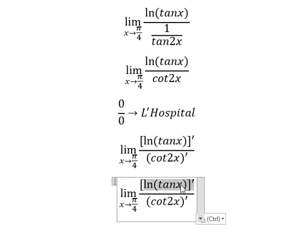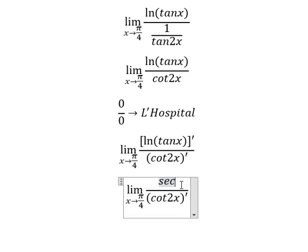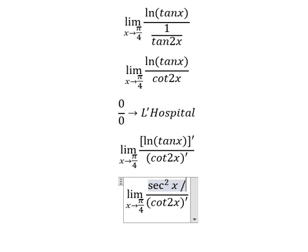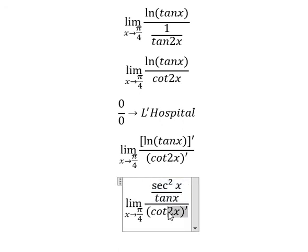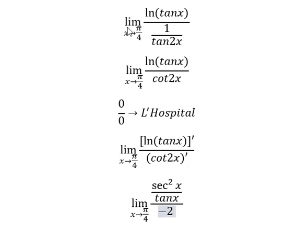So this one we have secant squared of x over tan x. This one we have negative number 2 cosecant squared of 2x.